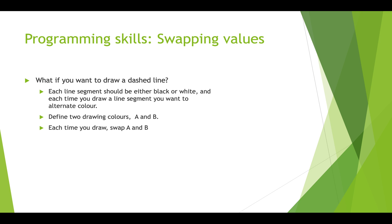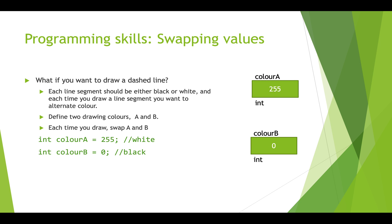It seems simple enough and you might think we set them up like this: set colorA to white and colorB to black. This creates our boxes in memory — colorA is an int with 255 in it, and colorB is an int with zero in it — and then we want to swap these two variables.